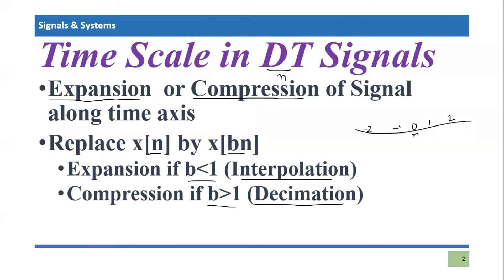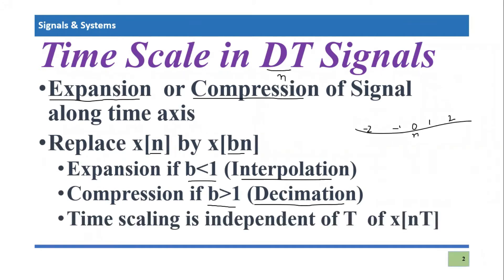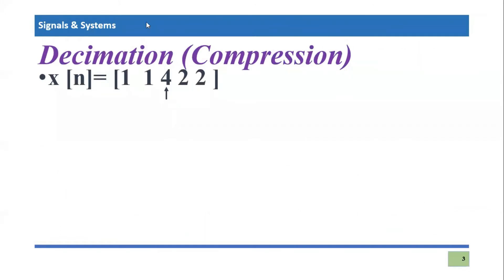One important thing to note is that time scaling in discrete time signals is totally independent of the sample space, also known as capital T. When we represent any discrete time signal in mathematical form it is x(nT), where n indicates the time domain and T indicates the spacing between two consecutive bins. This time scaling operation is totally independent of capital T.